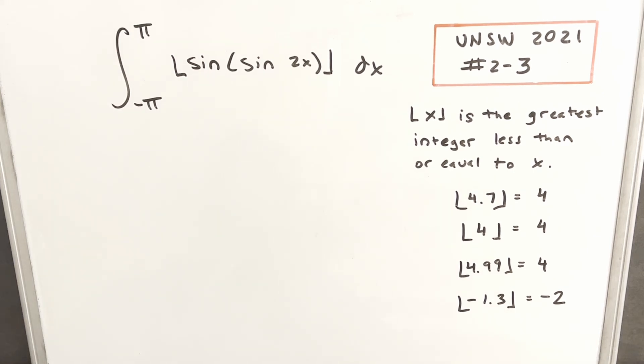Clearly, I think the most important thing for us to deal with in this integral is the floor function. Let's see just how this works. The floor of x is the greatest integer less than or equal to x, a function that always helps us round down. We have some examples here. The floor of 4.7 rounds down to 4. The floor of 4 stays at 4. The floor of 4.99 is still 4, even though it's really close to 5. And one other thing to notice: if we have a negative number, the floor of minus 1.3, the answer is not negative 1, it goes down to negative 2.